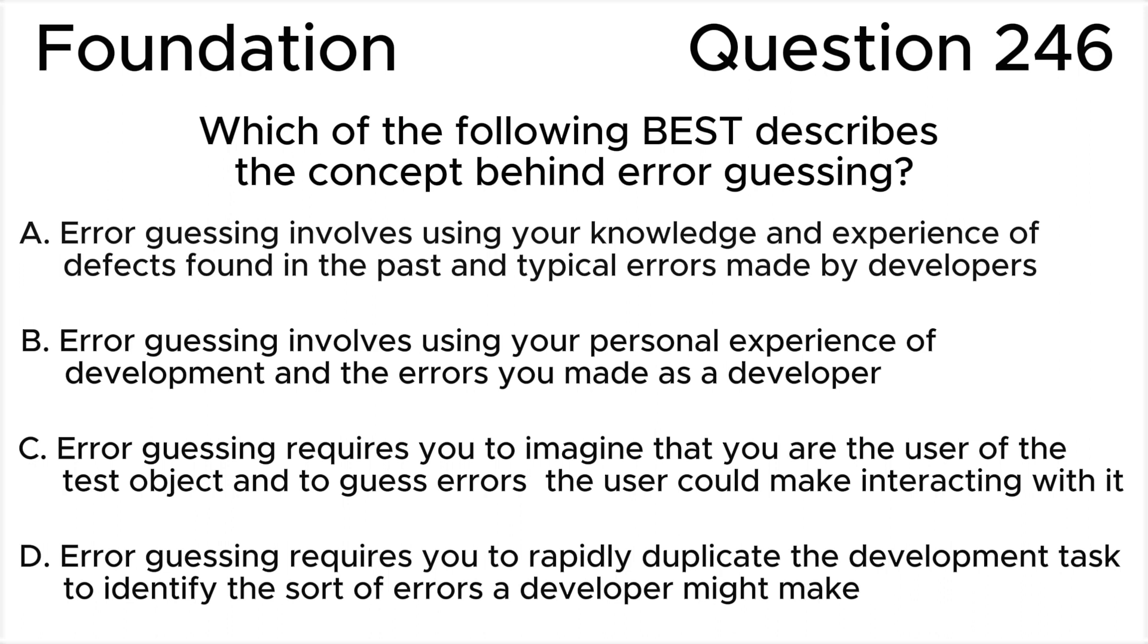Option B: Error guessing involves using your personal experience of development and the errors you made as a developer. Option C: Error guessing requires you to imagine that you are the user of the test object and to guess errors the user could make interacting with it. Option D: Error guessing requires you to rapidly duplicate the development task to identify the sort of errors a developer might make.